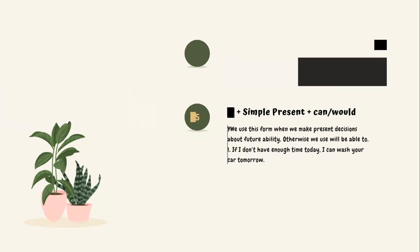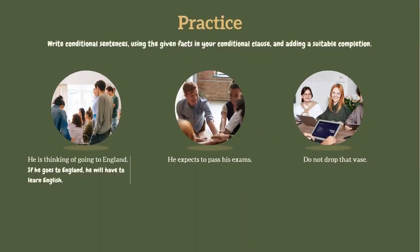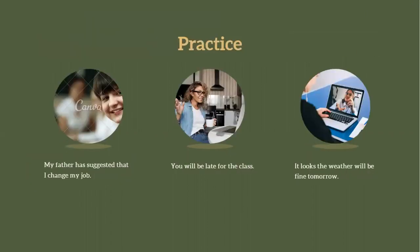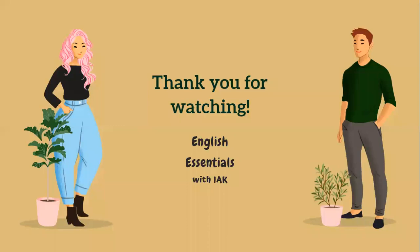Now we come to another practice session. This time the answers are not provided — please write your answers in the comment box. Number one: he is thinking of going to England — for example, 'If he goes to England, he will have to learn English.' Number two: he expects to pass his exams. Number three: do not drop that vase. Number four: my father has suggested that I change my job. Number five: you will be late for the class. Number six: it looks like the weather will be fine tomorrow.